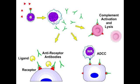What test is used to diagnose Type 2 Hypersensitivity? The test useful in diagnosing Type 2 Hypersensitivity is the direct and indirect Coombs tests, used to detect the antibodies.